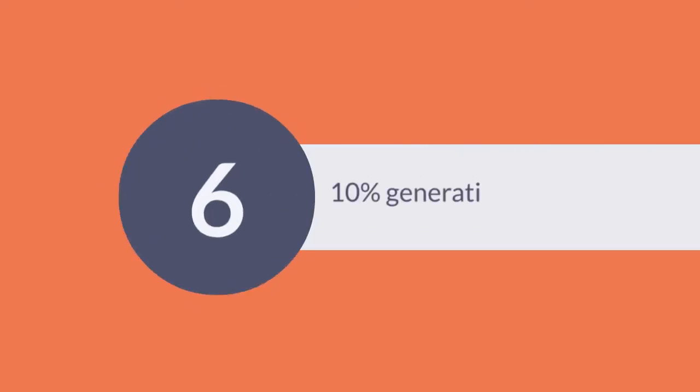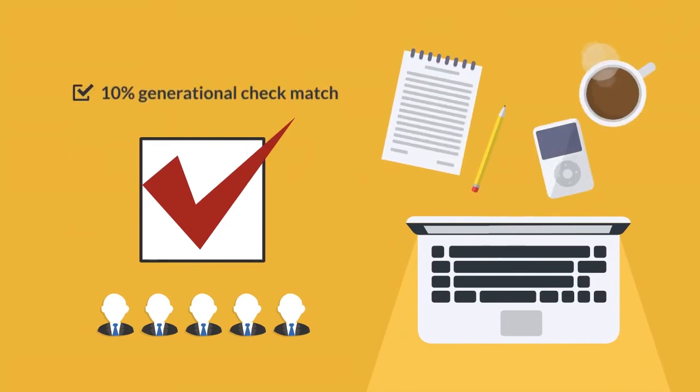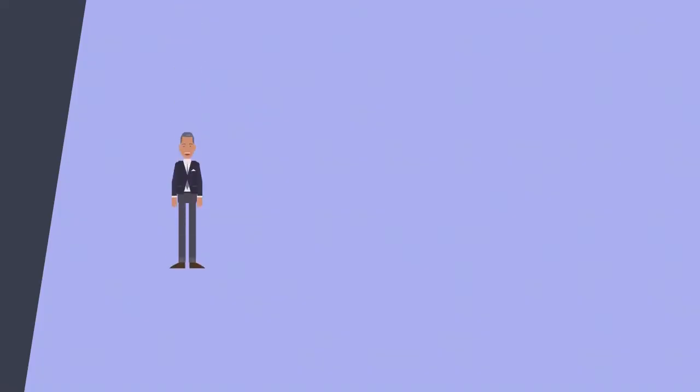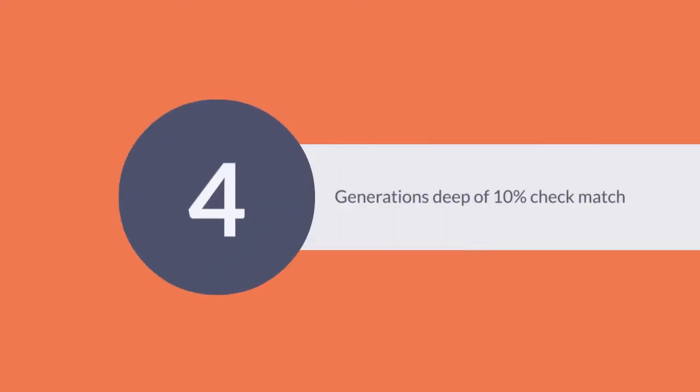Our sixth bonus is the 10% generational check match. This is also based on the two-team binary pay. You will receive a 10% check match on up to four generations of silver qualified brand partners. Let's say you personally enroll Bob and he recruits Susan and she recruits Lindsay and then Lindsay sponsors Amy. Let's say Amy is the first in that line to hit the rank of silver. You're going to get paid a 10% check match from everyone from Bob down to Amy. That's one generation and you get paid four generations deep of 10% check match.